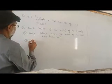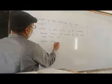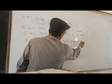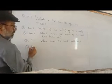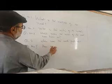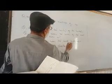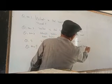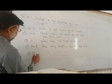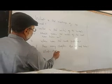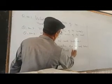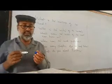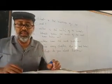Question number four: When was the novel published? Question number five: How many chapters does the novel contain? Question number six: What do you know about Ruritania?